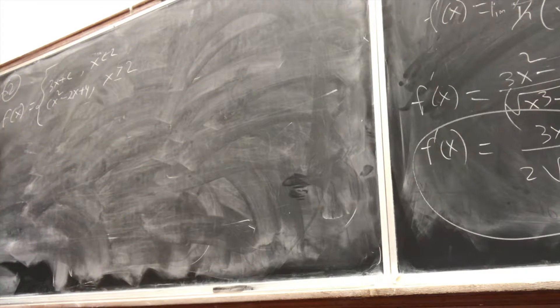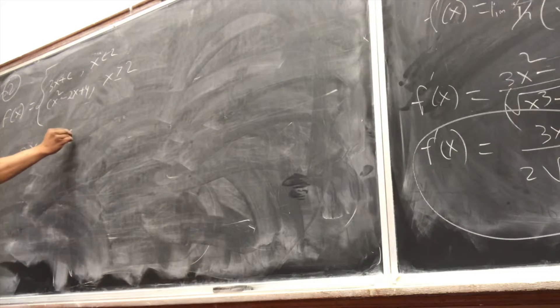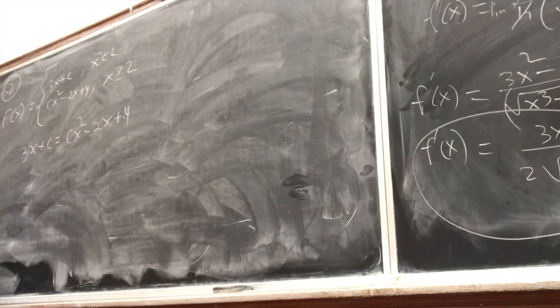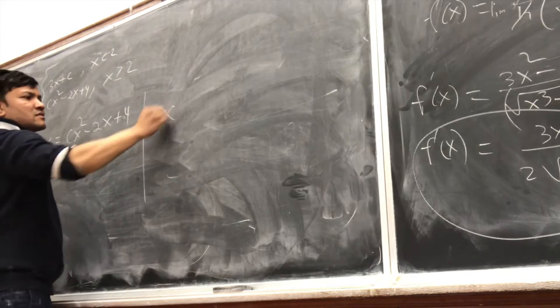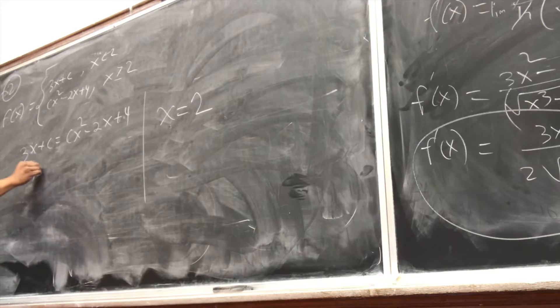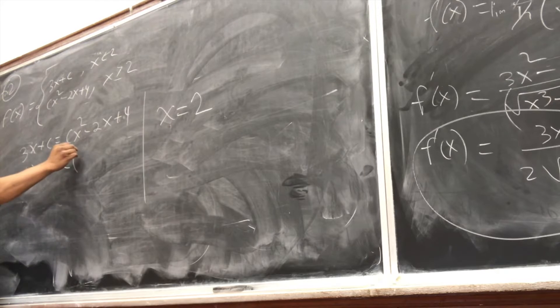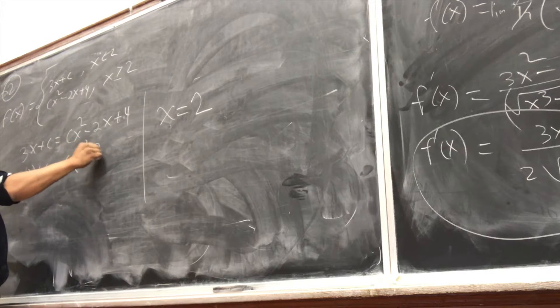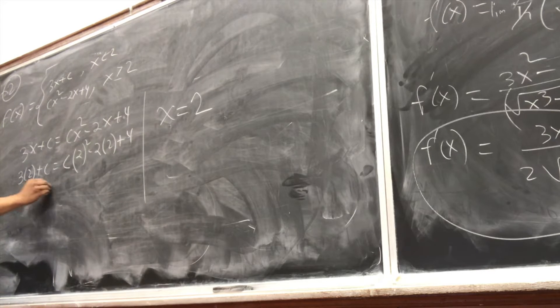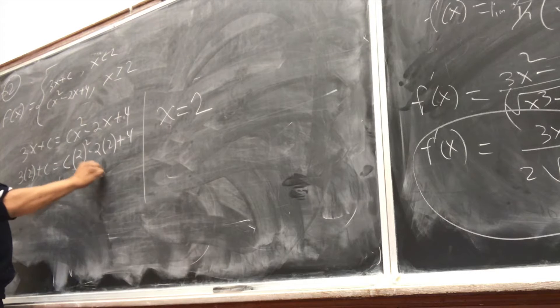This is problem number 2, and it's probably the easiest problem. We set 3x + c equal to cx² - 2x + 4, and the value of x is 2. We're going to plug in, so 3x + c equals... and we get 6 + c equals 4c - 4 + 4.